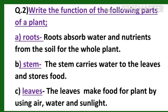Question number 2: Write the function of the following parts of a plant. Number A: Roots. Roots absorb water and nutrients from the soil for the whole plant. Number B: Stem. The stem carries water to the leaves and stores food. Number C: Leaves. The leaves make food for plants by using air, water and sunlight.